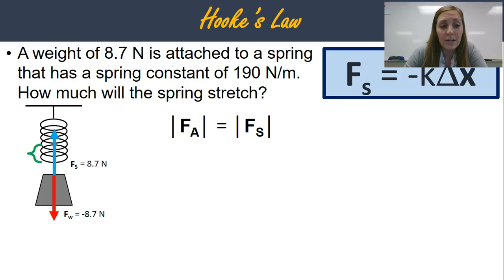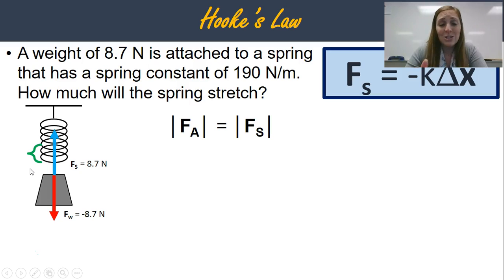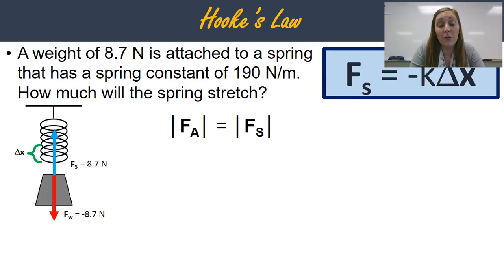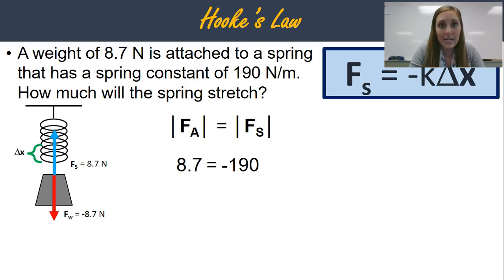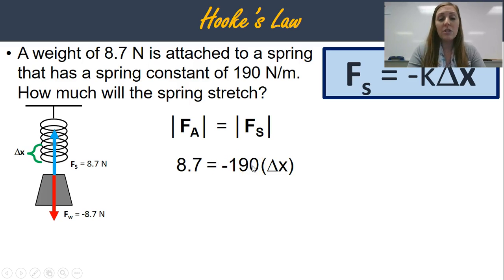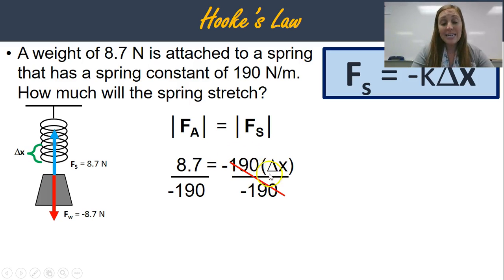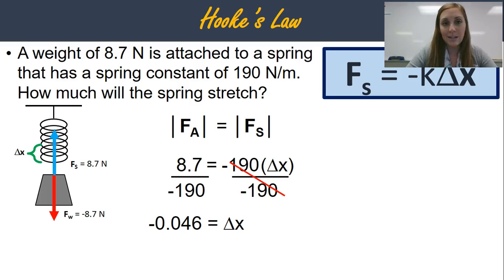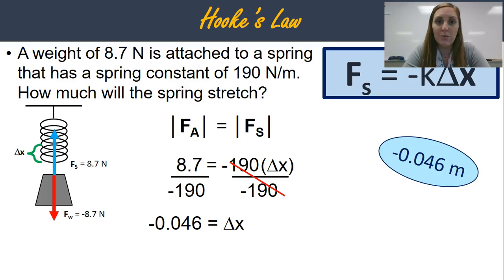So what we want to know is how much was this stretched — whatever this distance is, is delta x. Now that I have everything labeled, I'm going to use my equation for Hooke's Law. The force of the spring is 8.7, and that equals negative k, so negative 190, times delta x. To get delta x by itself — it's currently being multiplied by negative 190 — divide both sides by negative 190. The negative 190s cancel on the right. You'll get negative 0.046 for delta x. Don't forget your units — delta x is always measured in meters, so negative 0.046 meters.